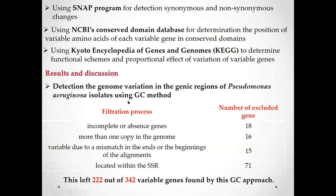Results and discussion: Detection of genome variation in Pseudomonas aeruginosa isolates using the Genome Comparator program. When we used the GC program, we found 342 genes overall. However, when we excluded the spurious variable genes, the real variable genes were 222. The excluded spurious genes were as follows: incomplete or absent genes — 18; more than one copy (paralogous loci) — 16; variable due to mismatch at the start or end of alignment — 15 genes; and variation located within simple sequence repeats — 71. All of these were excluded from the analysis.